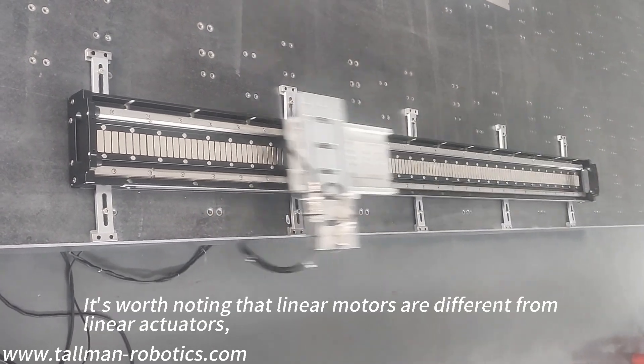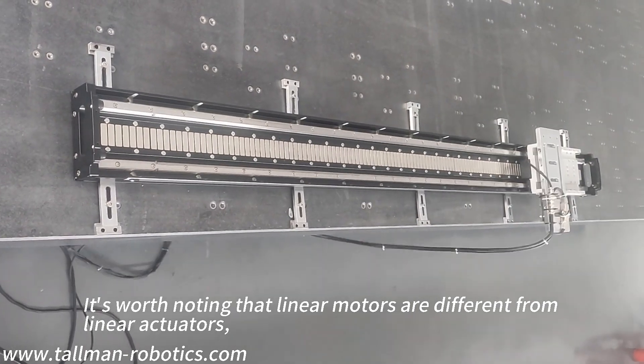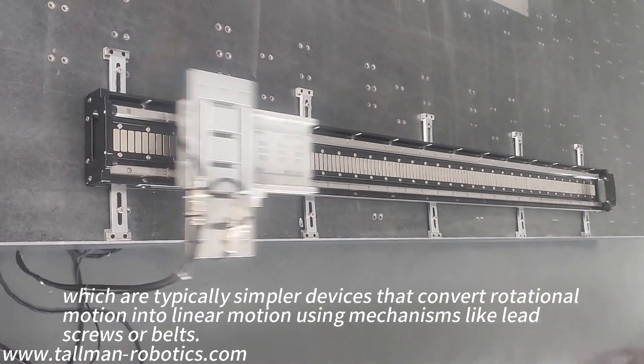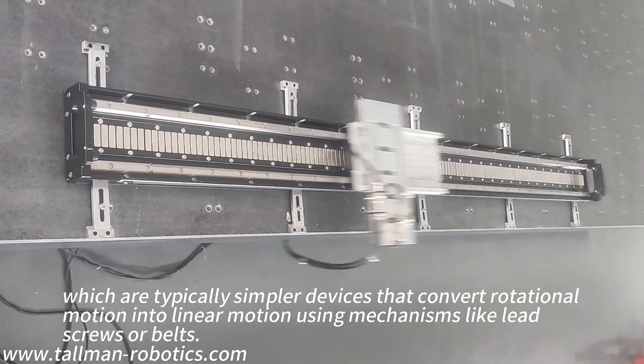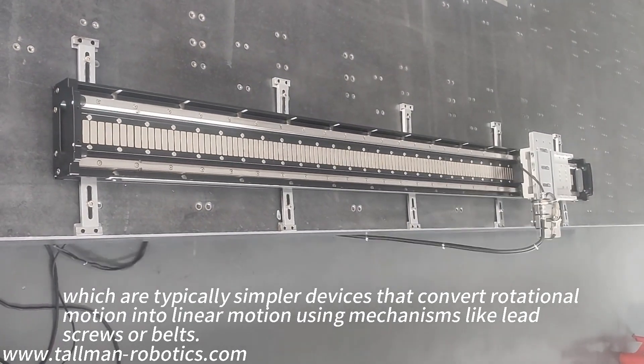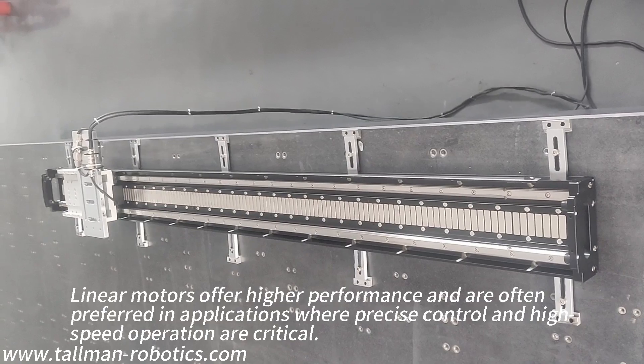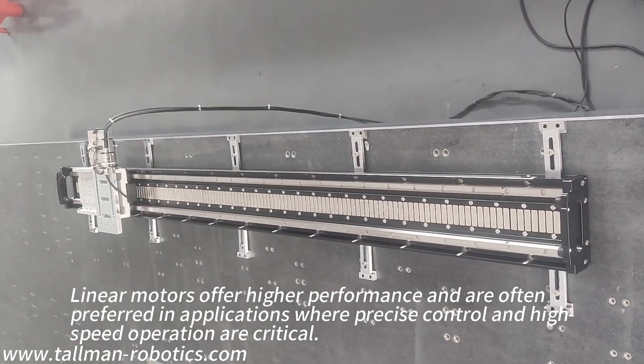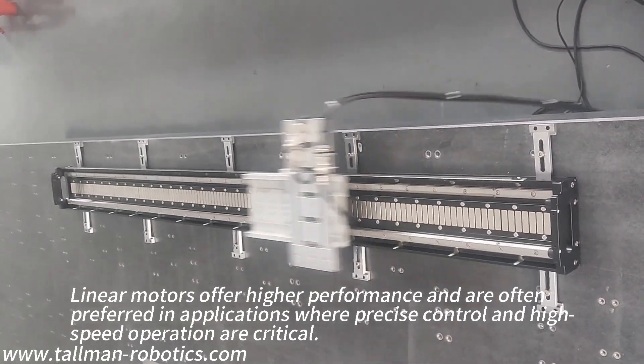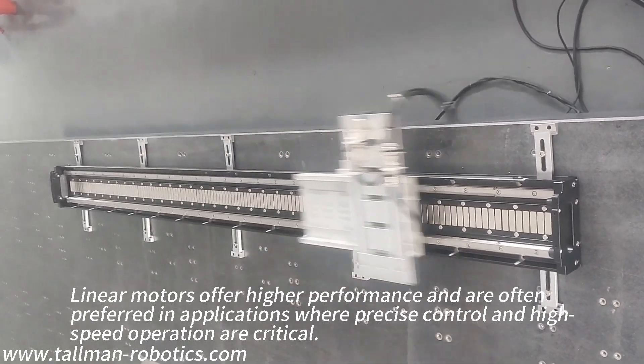It is worth noting that linear motors are different from linear actuators, which are typically simpler devices that convert rotational motion into linear motion using mechanisms like lead screws or ballscrews. Linear motors offer higher performance and are often preferred in applications where precise control and high-speed operation are critical.